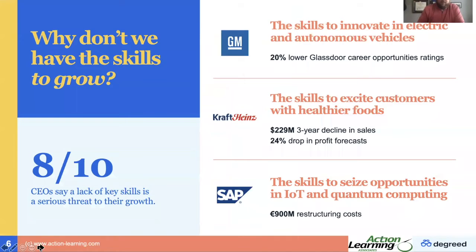We'll keep with the 80% theme. PricewaterhouseCoopers — PWC — does their annual CEO study, and the study last year was pretty similar to the one the year before: roughly 80% of CEOs feel they lack the skills needed, which presents a serious threat to their growth. You'll see some examples on the right-hand side. The first is General Motors — they're looking at the shift to electric and autonomous vehicles and not having the skills. They've got a massive plan now and have restructured to figure out what skills are needed, what they need to upskill, and what skills they need to recruit in.